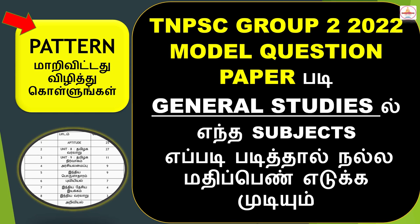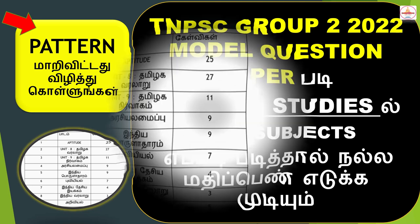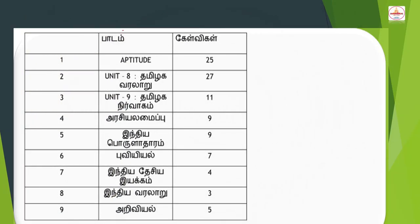We will talk about the importance of various subjects. The aptitude is 25-25 marks. We will talk about the importance of your aptitude. We will talk about the difference between 25 and 75. There are some changes in the remaining 75.